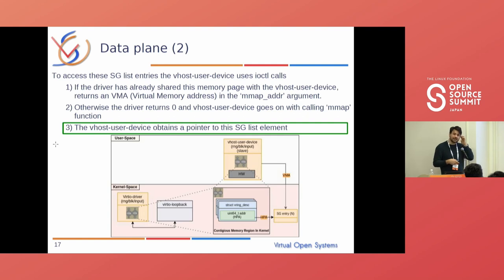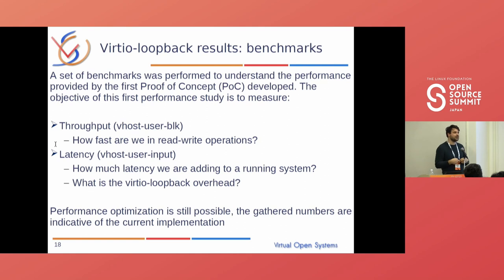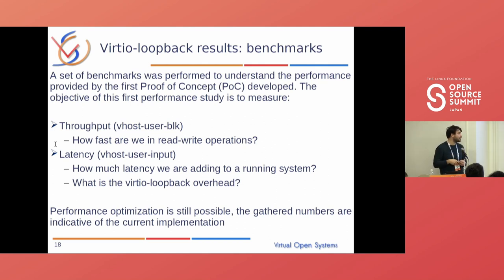Being based on shared memory, the overhead is low — you will see this from the benchmarks. We did two types of benchmarks: the first aimed at understanding throughput — how much data we can read and write. The second is based on latency — how much does it cost to have the additional components in the communication path? The throughput benchmark is done with block (disks), while latency was done with input.